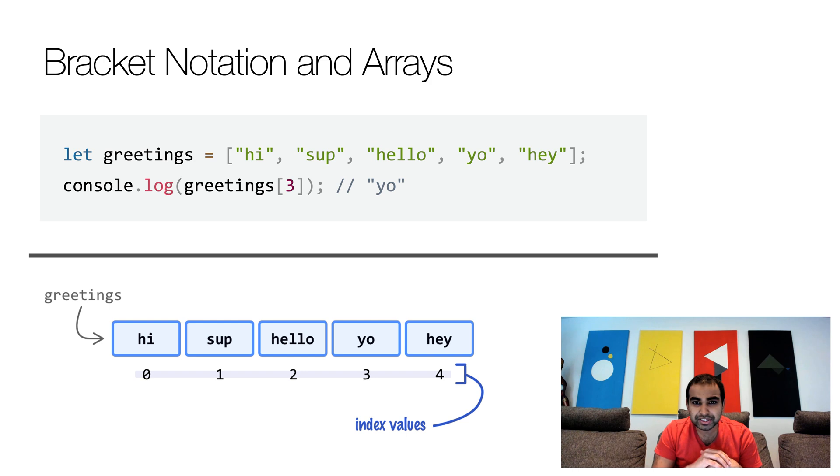Now, when you're using the bracket notation, which is a very common way for working with arrays, you can see this coming to play. So here we have a greetings array. We have five values in it. Hi, sup, hello, yo, and hey. And if I want to ask the third item, I just use console.log and I put greetings and a bracket value of three, which is the index position for yo. And that's what ultimately gets printed out. And you can see a visualization of what this actually looks like.